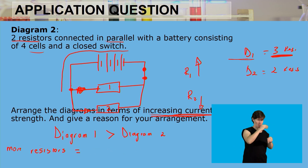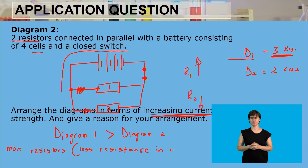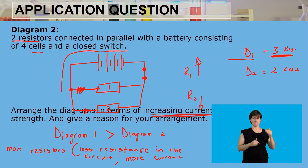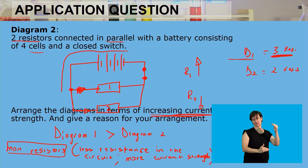More resistors in parallel means less resistance in the circuit. As we add more resistors in a parallel circuit, the total resistance decreases, and therefore the total current strength of that circuit increases.